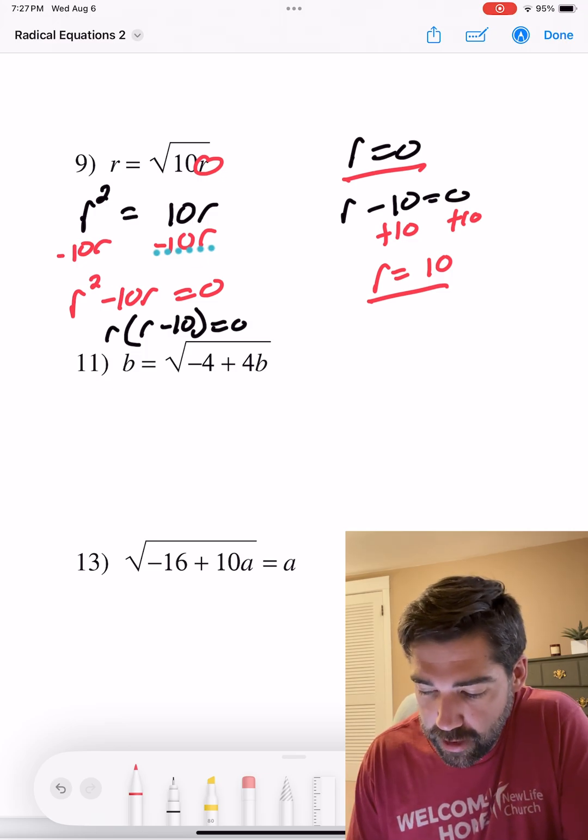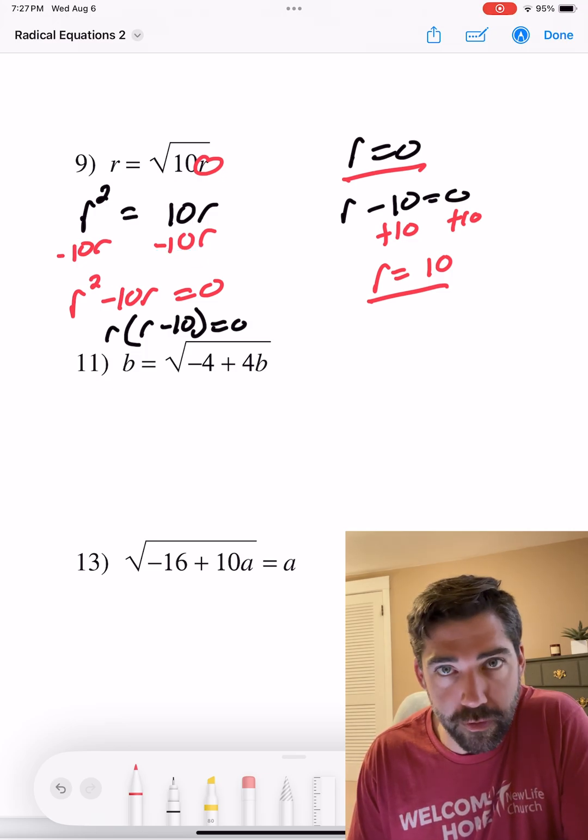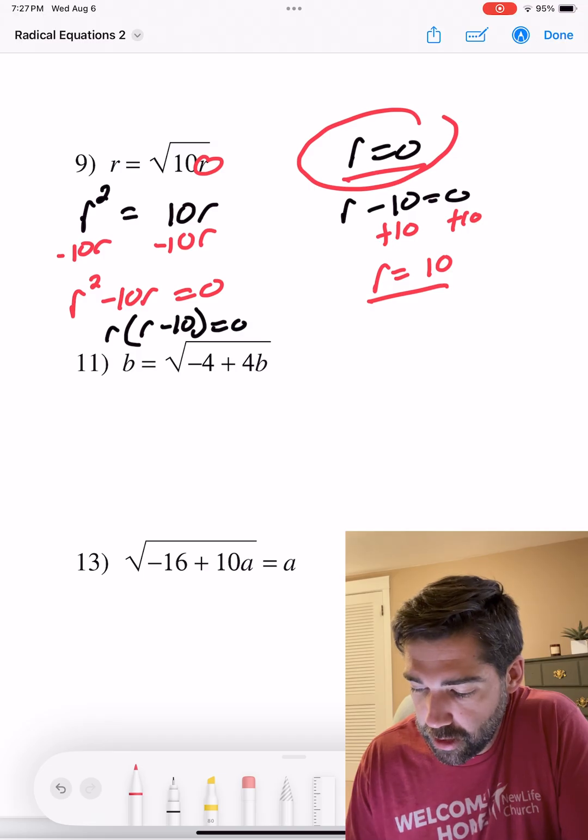If we were to plug in zero for r, 10 times zero is zero, square root of zero is zero. So actually both of these guys work.